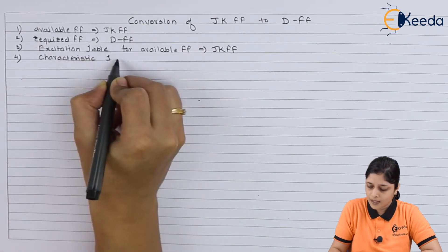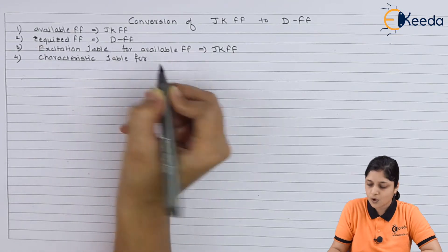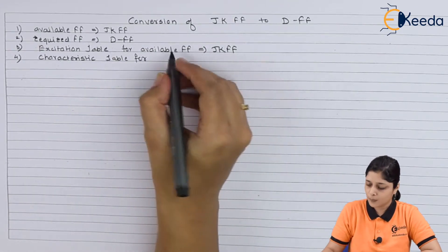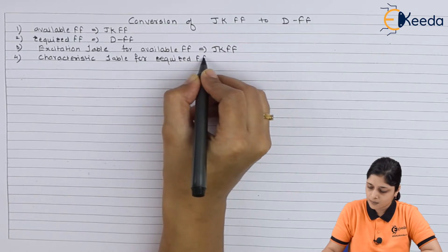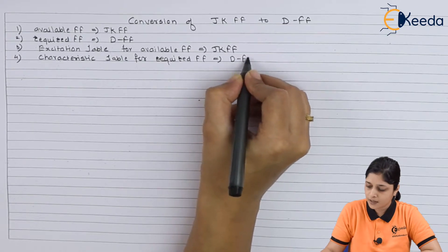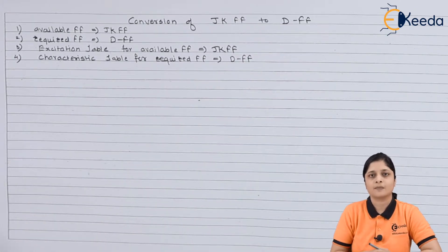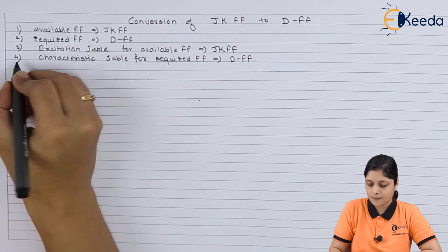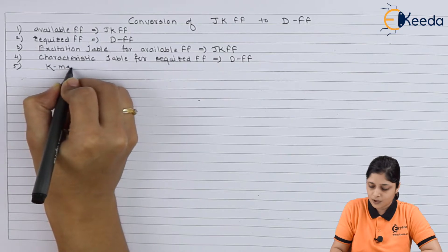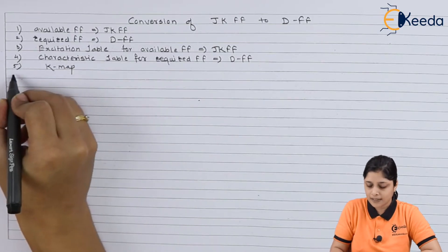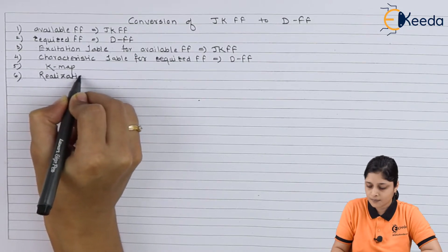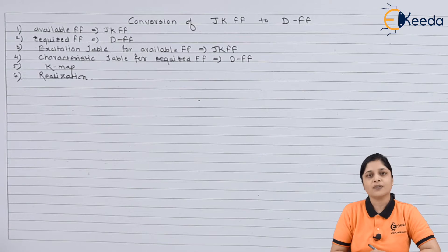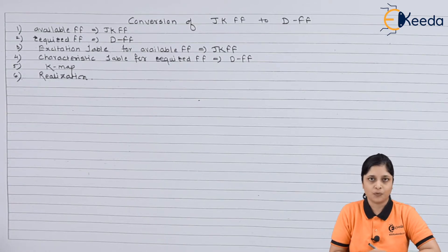We will write the characteristic table for the required flip-flop, which is the D flip-flop. After that, the K-map procedure starts — you have to draw the K-map and then do the realization. In this way you convert one flip-flop into another flip-flop.